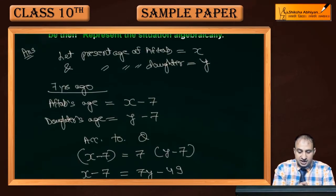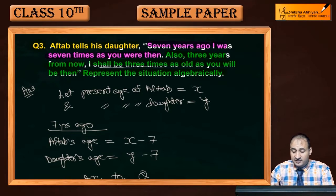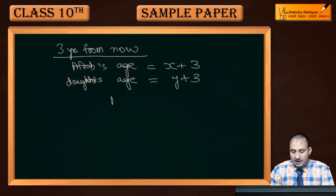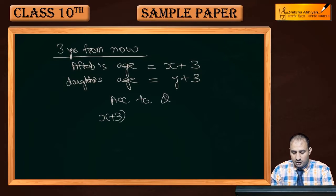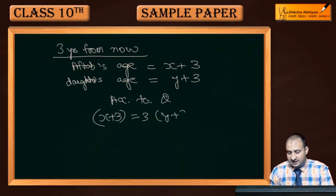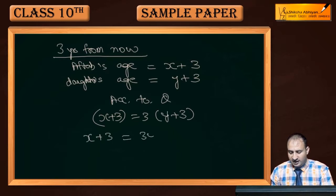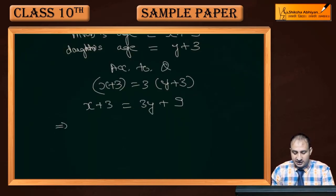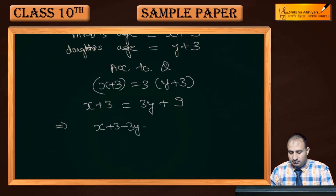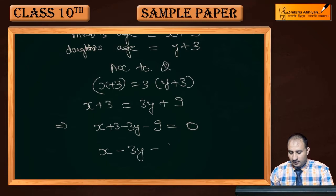Condition में यह कहा गया है कि I shall be 3 times — यानि Aftaab 3 times ज़्यादा होगा अपनी daughter की age से। According to question, second condition: Aftaab की age 3 times होगी daughter की age से। Solve करने पर: x plus 3 = 3(y plus 3), यानि x plus 3 = 3y plus 9। सारी चीज़ें left में लाने पर: x plus 3 minus 3y minus 9 = 0, that comes out to be x minus 3y minus 6 = 0। यह second equation है।